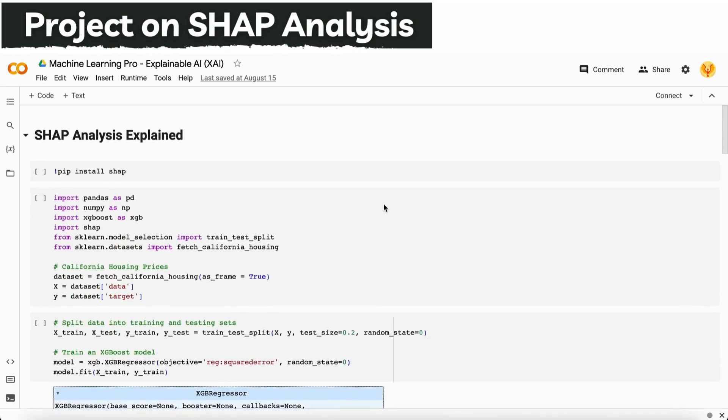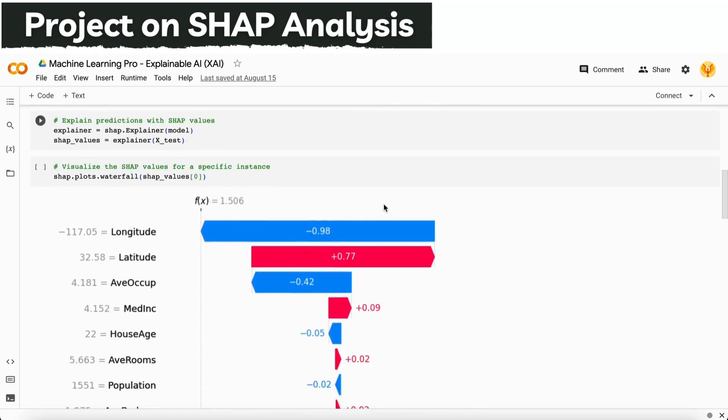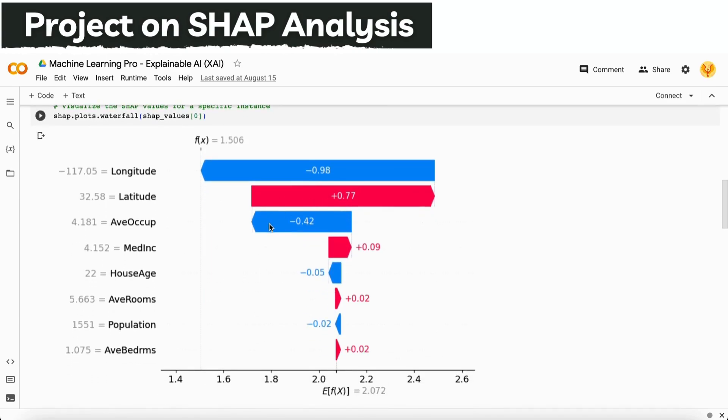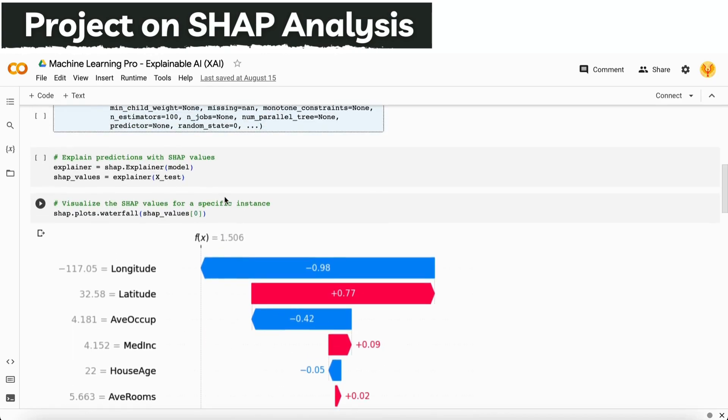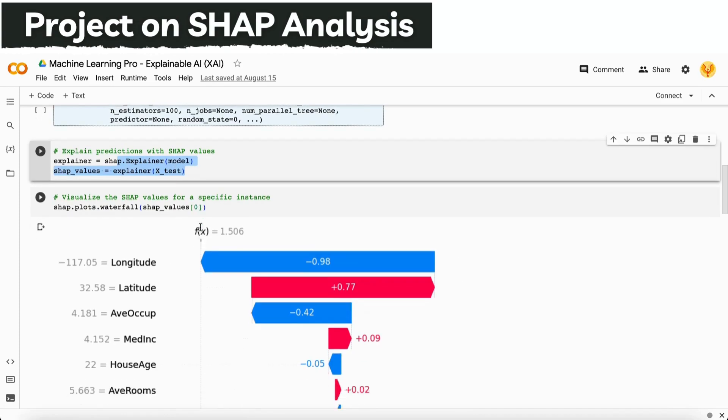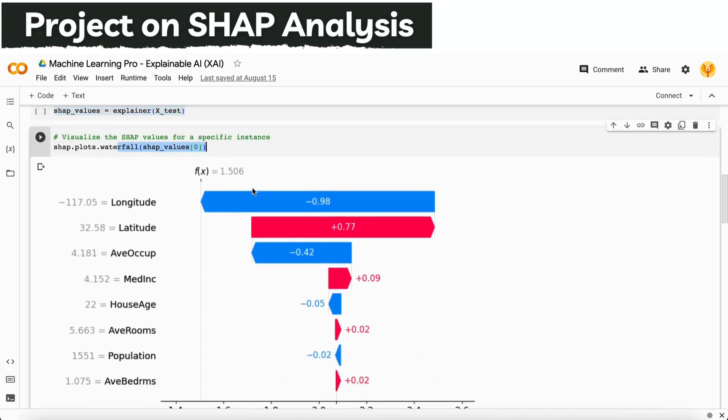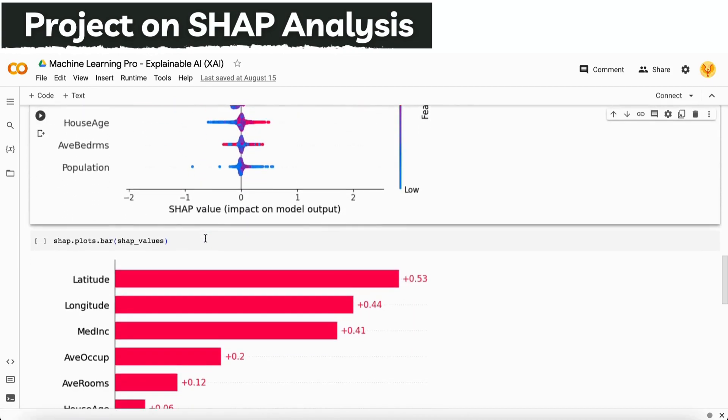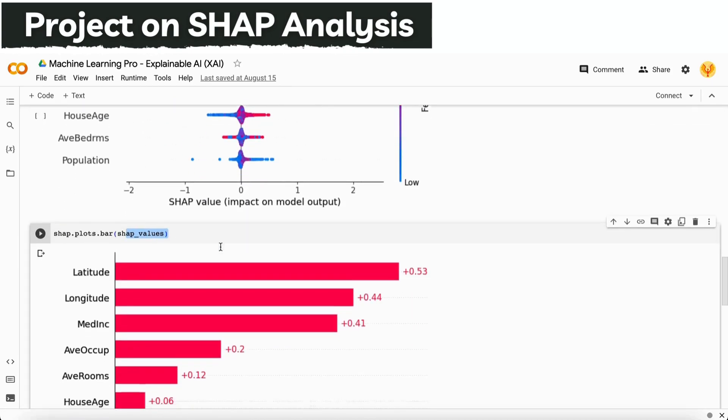So I hope you guys completely understand how you can get complete explainability of any kind of tree-based model or complex models by using SHAP analysis. SHAP analysis works in the same way: you fit your model, you get the explainability, and plot all the plots that you have. For a single data point, for all data points, and for all the values, you will get the answers to how your features will influence the target variables, whether those feature values are low or high.